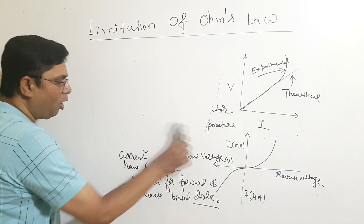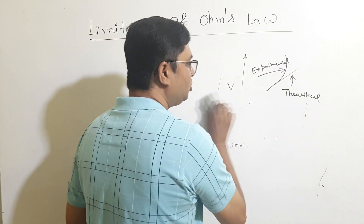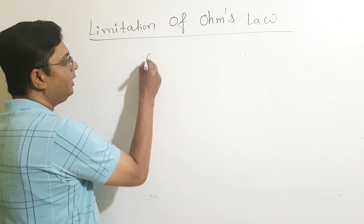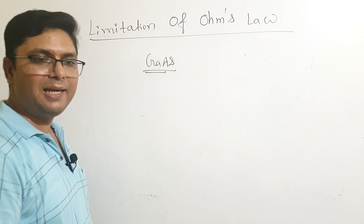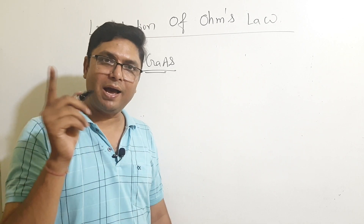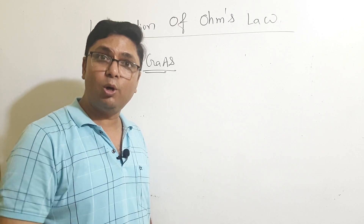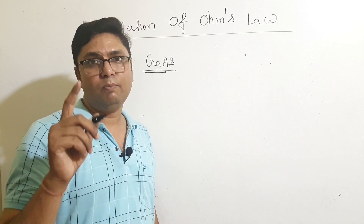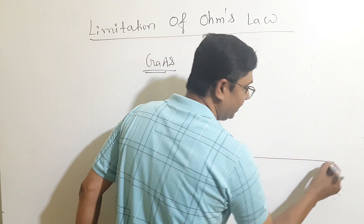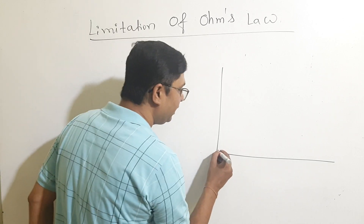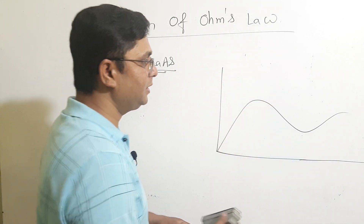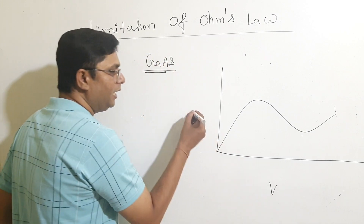The third limitation involves gallium arsenide (GaAs). If you make a wire of gallium arsenide and connect it to a battery source along with a voltmeter and milliammeter, the nature of the graph for gallium arsenide is entirely different. The graph has a distinctive shape with V on the x-axis and I in milliampere on the y-axis.